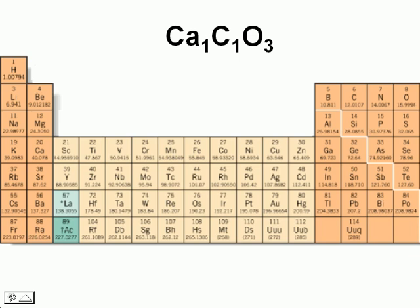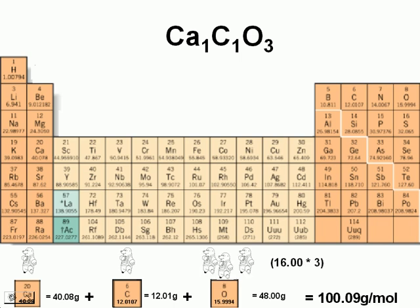In the case of calcium carbonate, CaCO3, one mole of the substance contains one mole of calcium. Since the subscript of calcium is one, subscripts that are not written are implied to be one. One mole of carbon—the subscript of carbon is implied to be one—and three moles of oxygen. The subscript of oxygen in the formula is three.